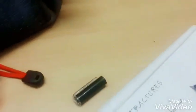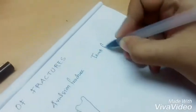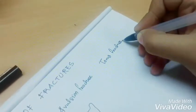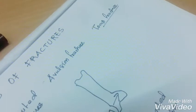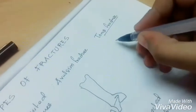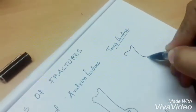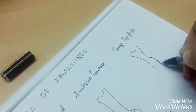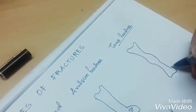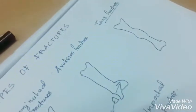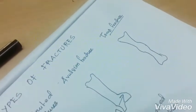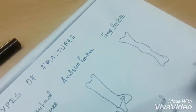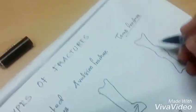Next one is torus fracture, also called buckle fracture. There will be bulging of the cortex of the bone. This usually occurs due to trabecular compression from a loading force along the axis of the bone.